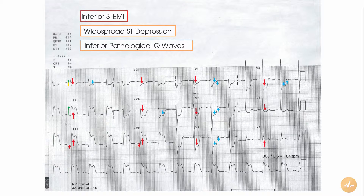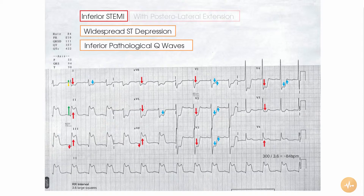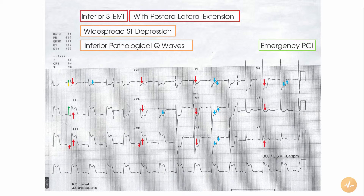These ST changes would be seen as ST segment elevation if posterior ECG leads were applied. In addition, the R waves would then look like pathological Q waves. This patient is having an inferior ST segment elevation myocardial infarction with posterior and lateral extension. They should be transferred to the catheterization lab for emergency PCI immediately.